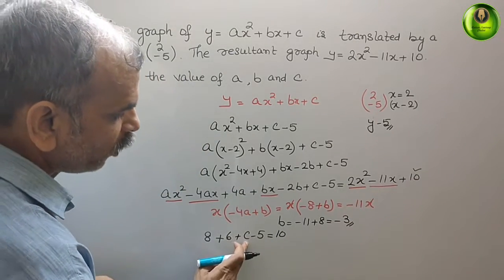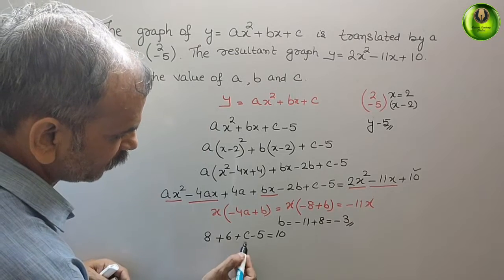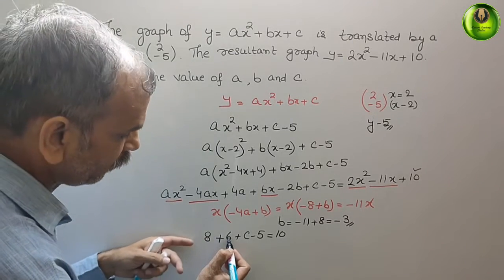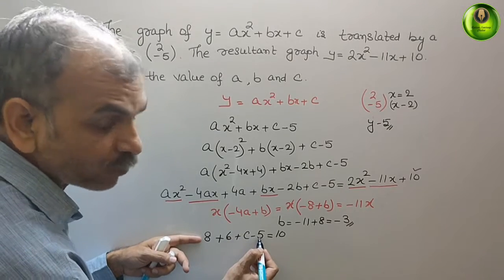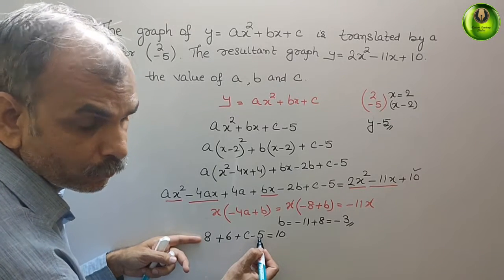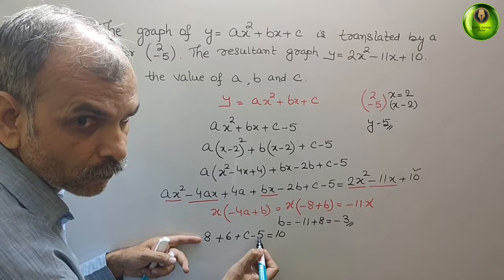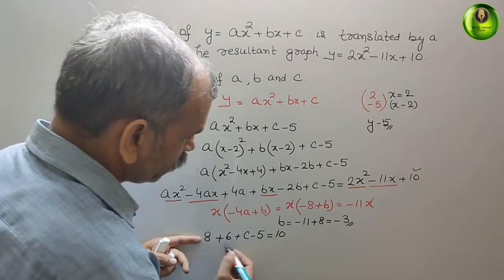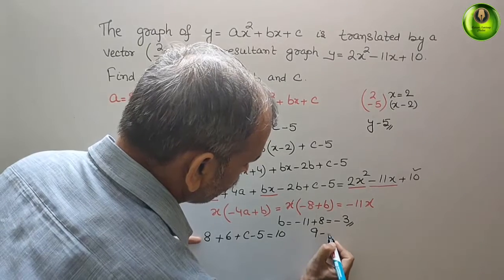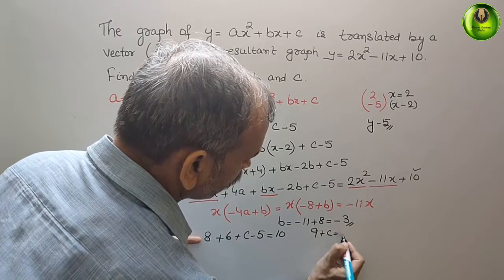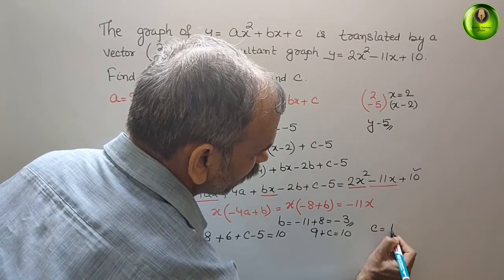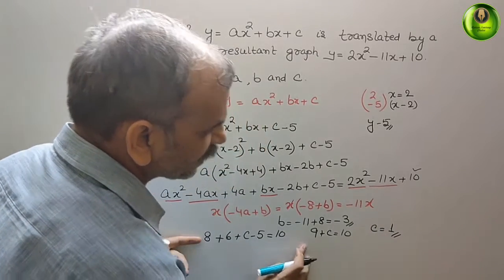Now what is your c? See this: 8 plus 6 is 14, 14 minus 5 is 9. So here it will come as 9 plus c equals 10. So therefore, we can say c is 1. 10 minus 9 is 1.